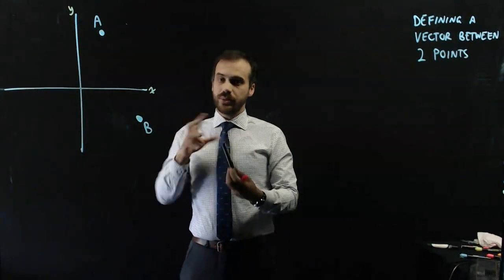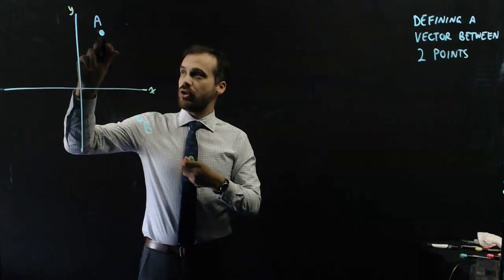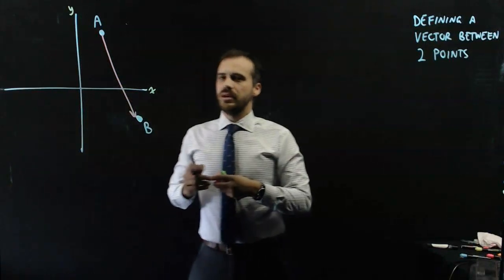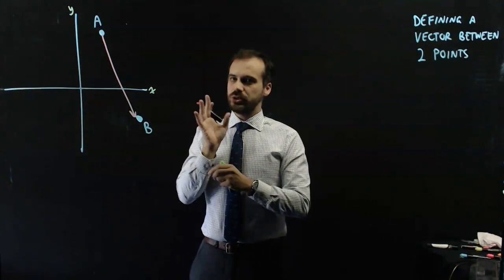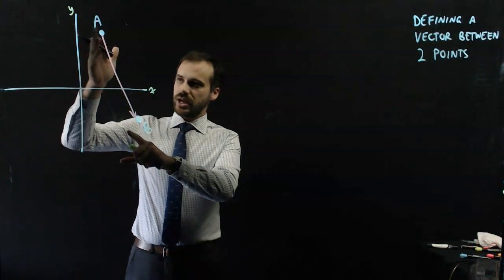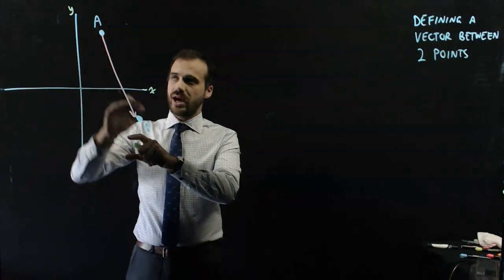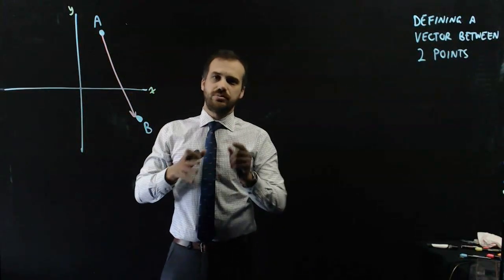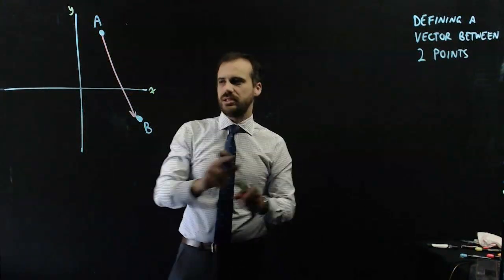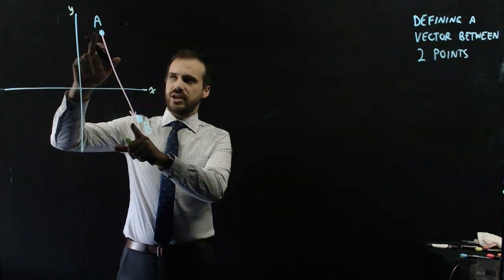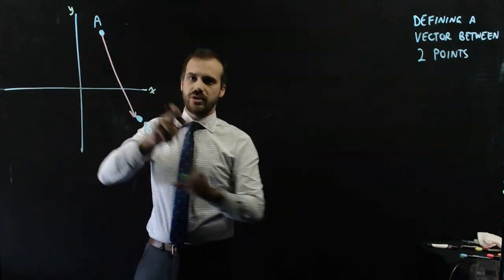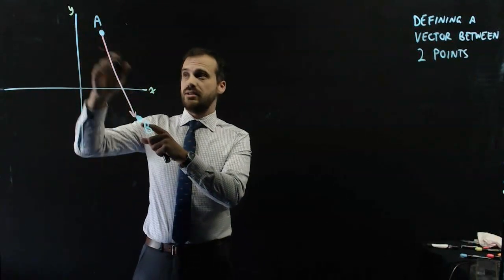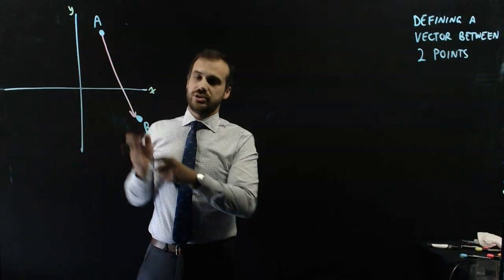Now, I'm going to define the vector from point A to point B. Now, just before we get into that, I want you to realize that, yes, I'm creating what is supposed to be a straight arrow between point A and B, but remember vectors don't have solid positions. They're not stuck in a particular point. So once I've defined vector AB, I can move it around.